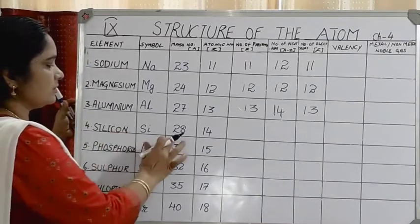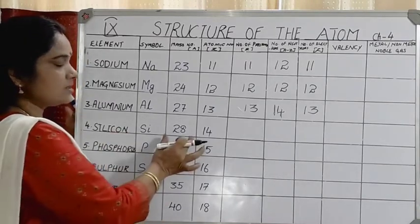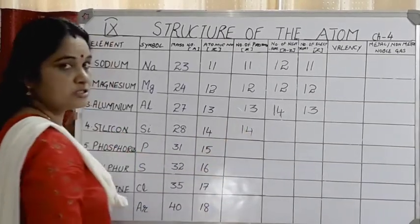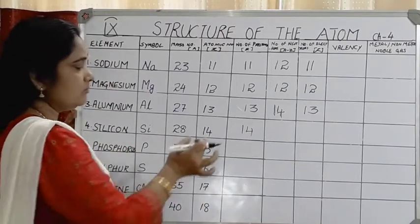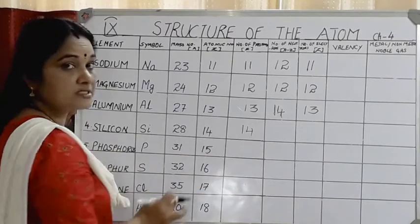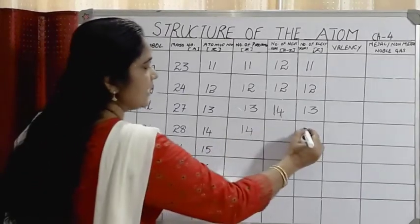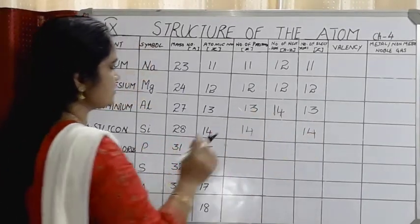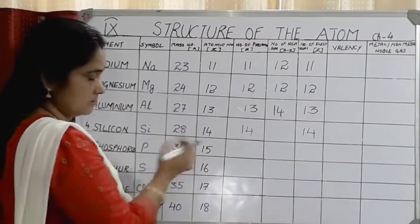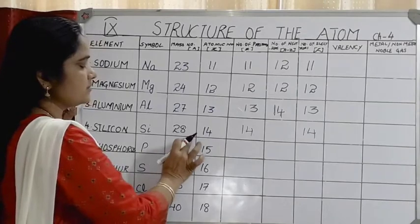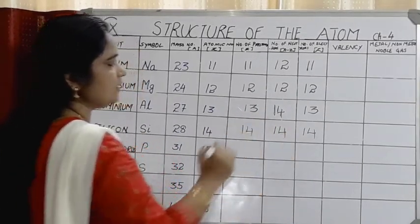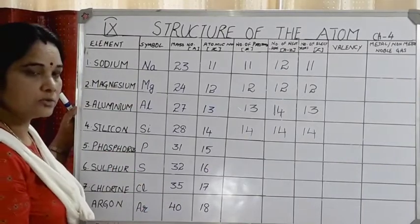Next is silicon, with mass number 28 and atomic number 14. Atomic number = number of protons = 14. Since the atom is neutral, the number of electrons is also 14. Number of neutrons = mass number minus atomic number = 28 minus 14 = 14 neutrons present in the nucleus.